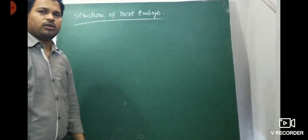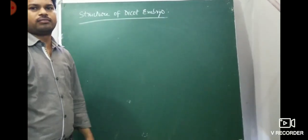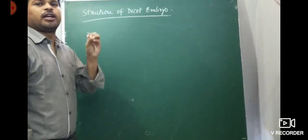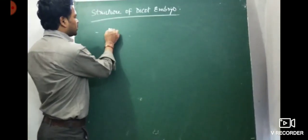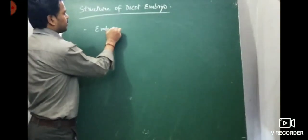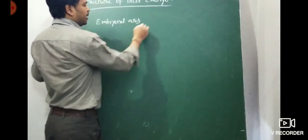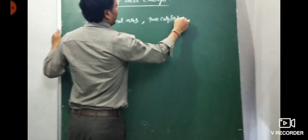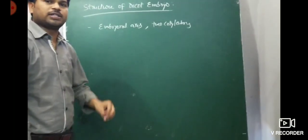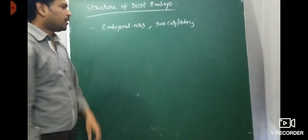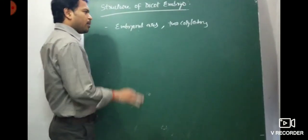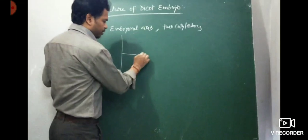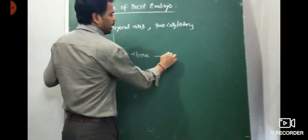Now, dicot embryo. Dicot embryo consists of an embryonal axis and two cotyledons. The embryonal axis has two regions: the portion above the cotyledon is called the epicotyl, which turns into the plumule or shoot.